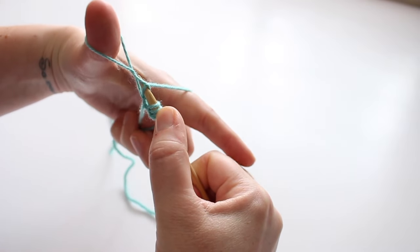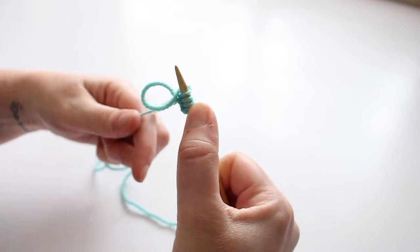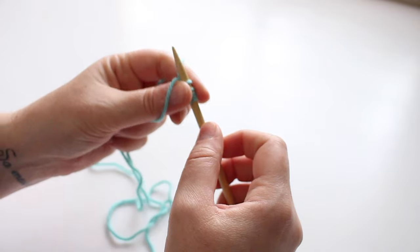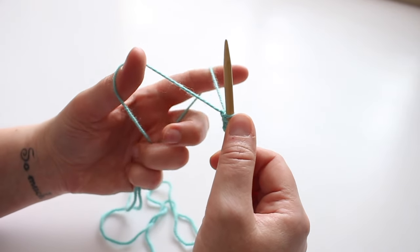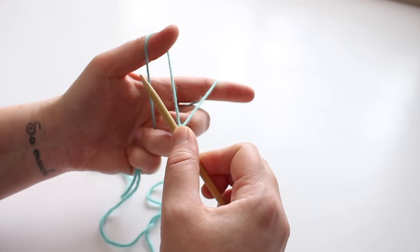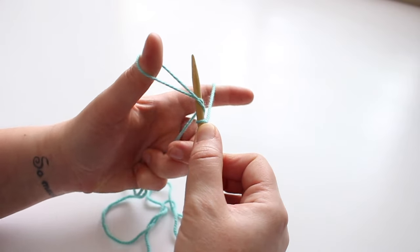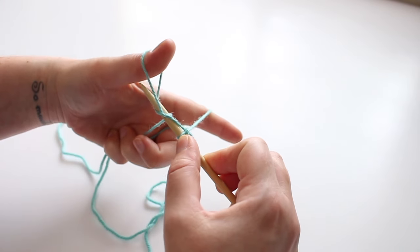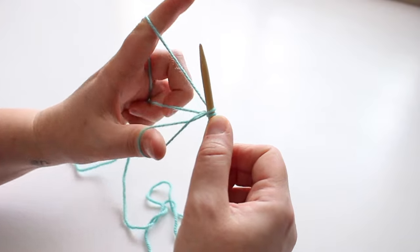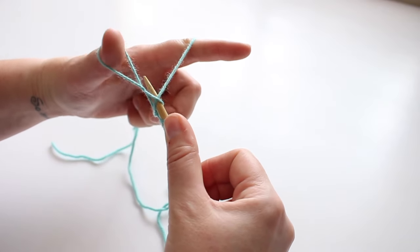There we go, pull it through that tiny triangle. One last time with our gun shape here. Go under both loops, through the triangle, twist it to the back and pull it through.